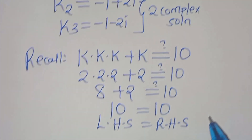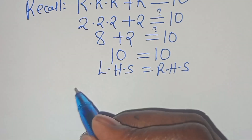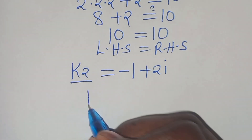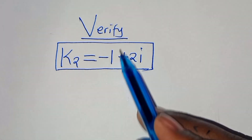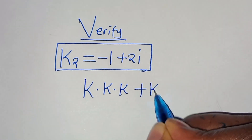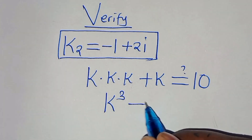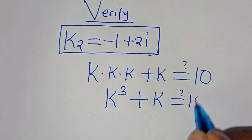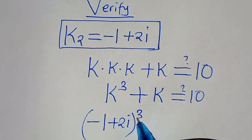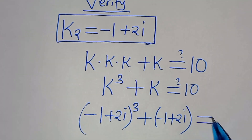Now let's check k2, which is minus 1 plus 2i. We have k times k times k plus k, which is k to the power of 3 plus k, and this is supposed to give us a value of 10. So we have minus 1 plus 2i raised to the power of 3, then plus k which is minus 1 plus 2i, and this is supposed to give us a value of 10.